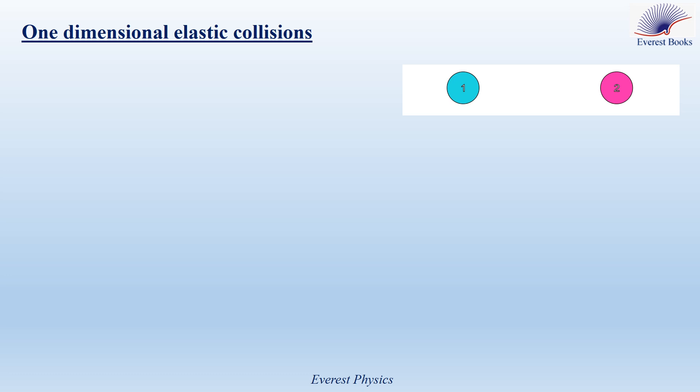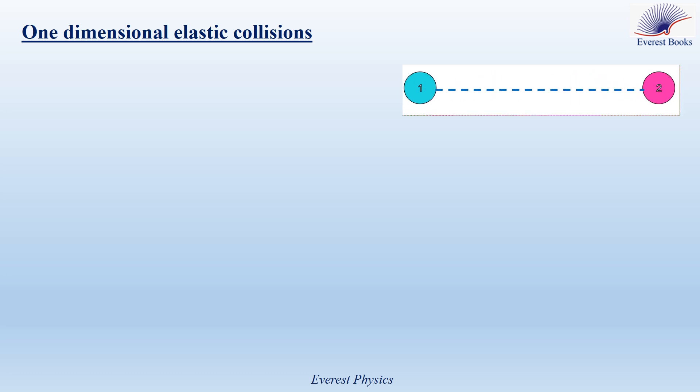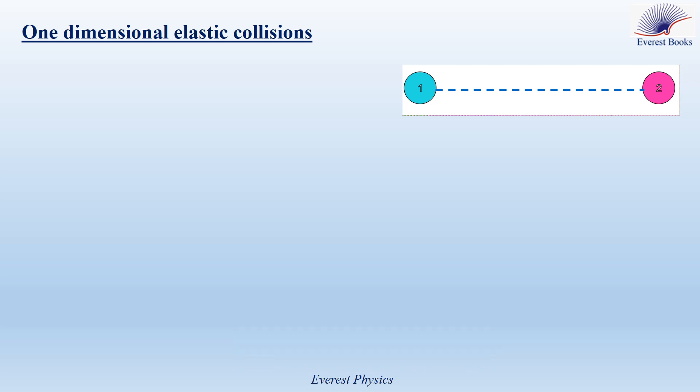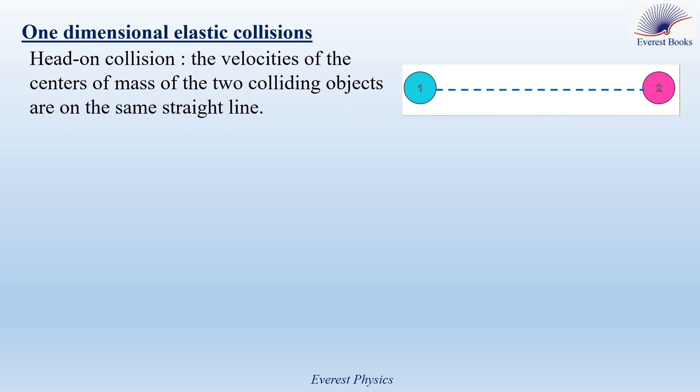What do we mean by one-dimensional collision? Watch this short animation. Two balls collide with each other. As you see, the velocities of the centers of mass of the two balls are on the same straight line. This collision is said to be a one-dimensional collision — a head-on collision where the velocities of the centers of mass of the two colliding objects are on the same straight line.